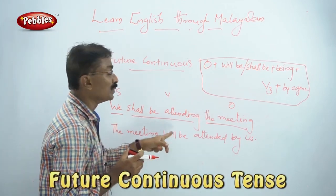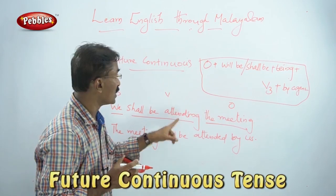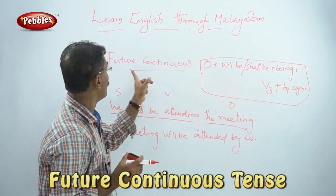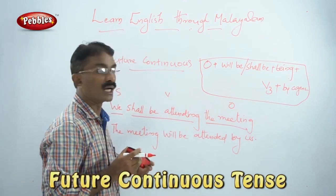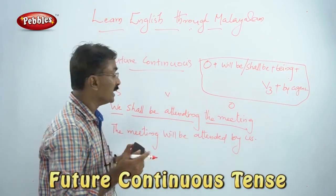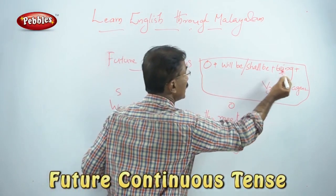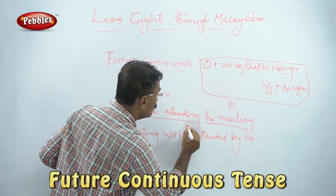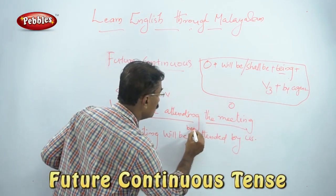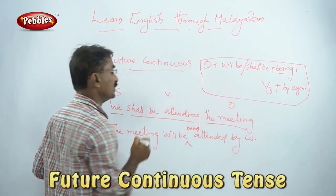In this tense, the simple future passive structure uses 'will be being' for the Future Continuous passive form.